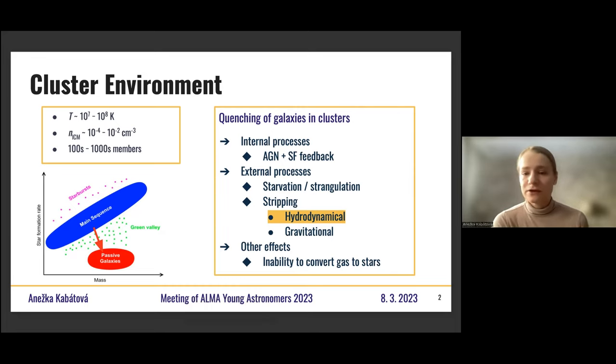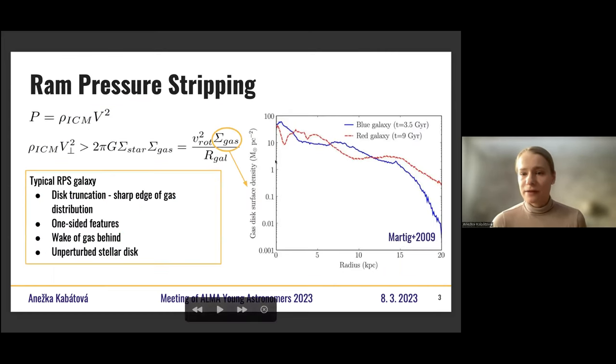So why does it happen? There are a number of processes that act on galaxies in clusters. There are, of course, internal processes that are not cluster dependent, such as AGN or star formation feedback. But there are also external processes that are caused by the presence of the galaxy in the cluster. So there will be, for example, tidal interaction of galaxy-galaxy or the gravitational interaction of the galaxy with the cluster itself. And then there are hydrodynamical processes, stripping, which is like tearing out the gas out of the galaxy disk.